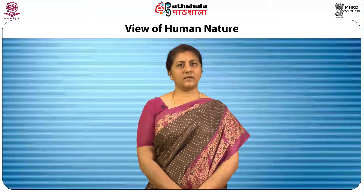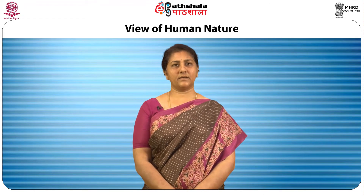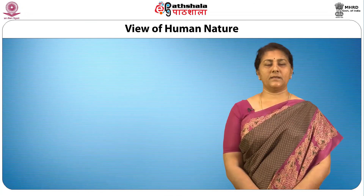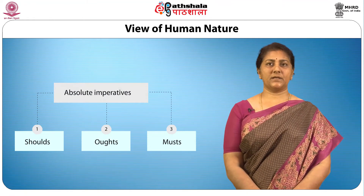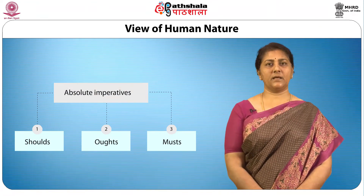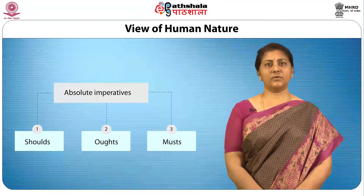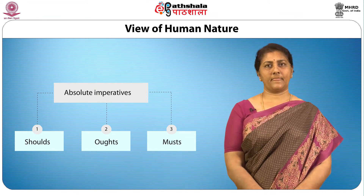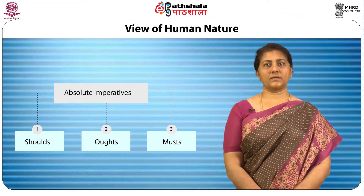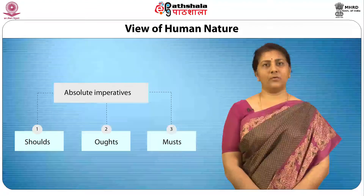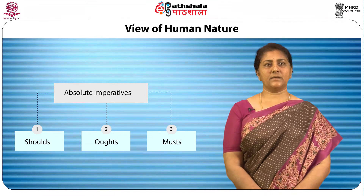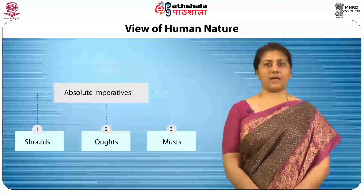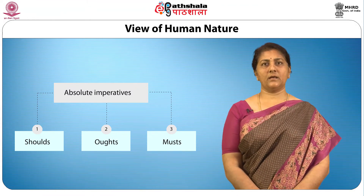Their thoughts, feelings and behaviors strongly include and interact with each other. The central theory of REBT says that people largely disturb themselves by thinking in terms of absolute imperatives — that is, shoulds, oughts and musts. Therefore, thinking in terms of absolute imperatives is the reason for disturbance and maladaptive behavior in human beings.